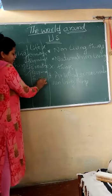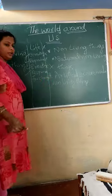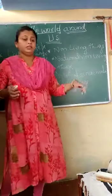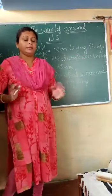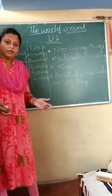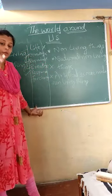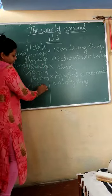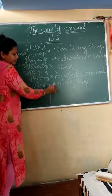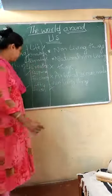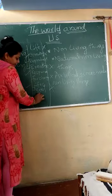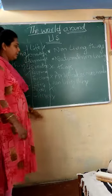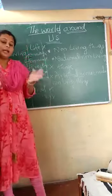All living things respond to changes in nature, in the surroundings, or in the climate. For non-living things, it doesn't matter whatever the climate or atmosphere changes — they do not respond. Living things also have life and death, and they have a life cycle. Non-living things have neither life nor death, and there is no life cycle for non-living things.